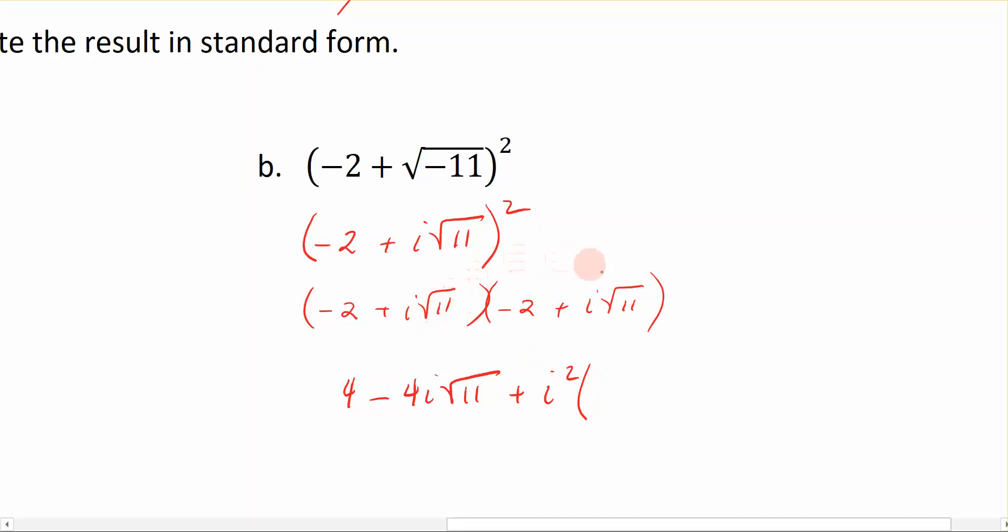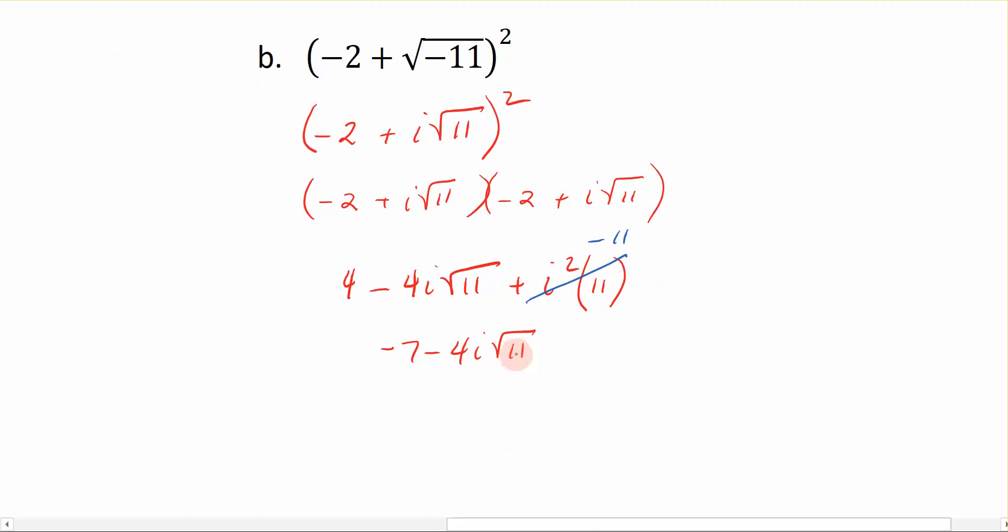So plus i squared times, and then multiply the square root of 11's together. The square root of 11 times the square root of 11 is just 11. Now we're ready to simplify further. Don't forget that when I have i squared, that's technically negative 1. So this is really negative 11. So I have 4 minus 11, which is negative 7, and I can't do anything with this term here. So minus 4i times the square root of 11. You can see that this is written in its standard form, where we have the real portion minus the imaginary portion.